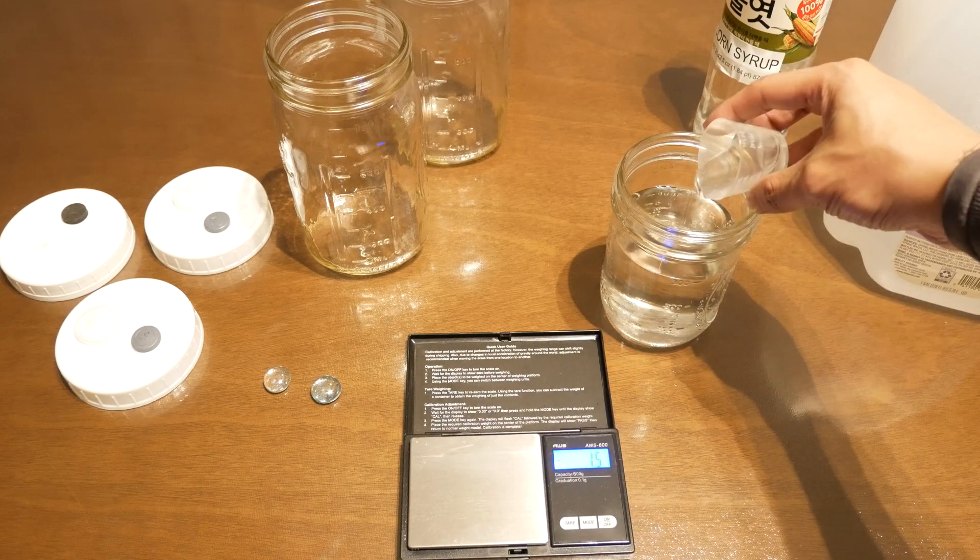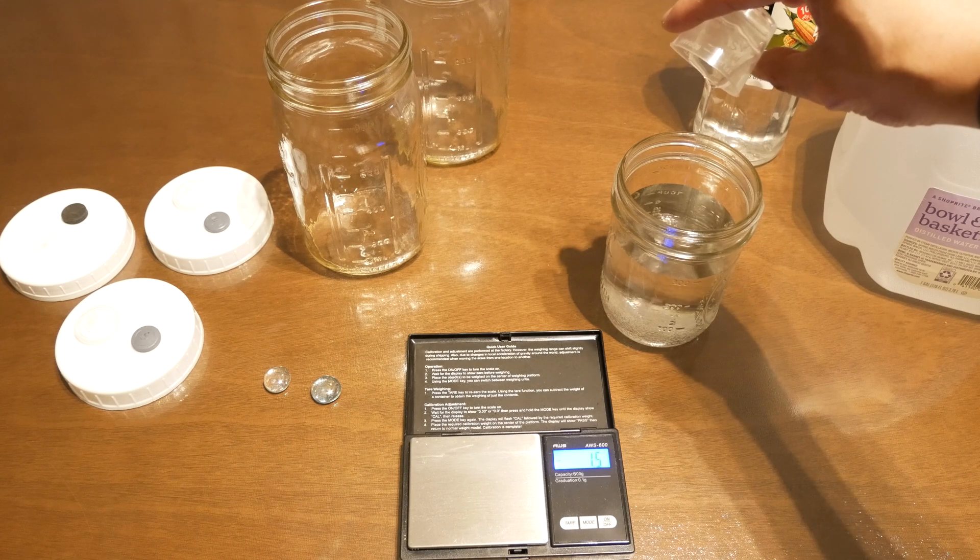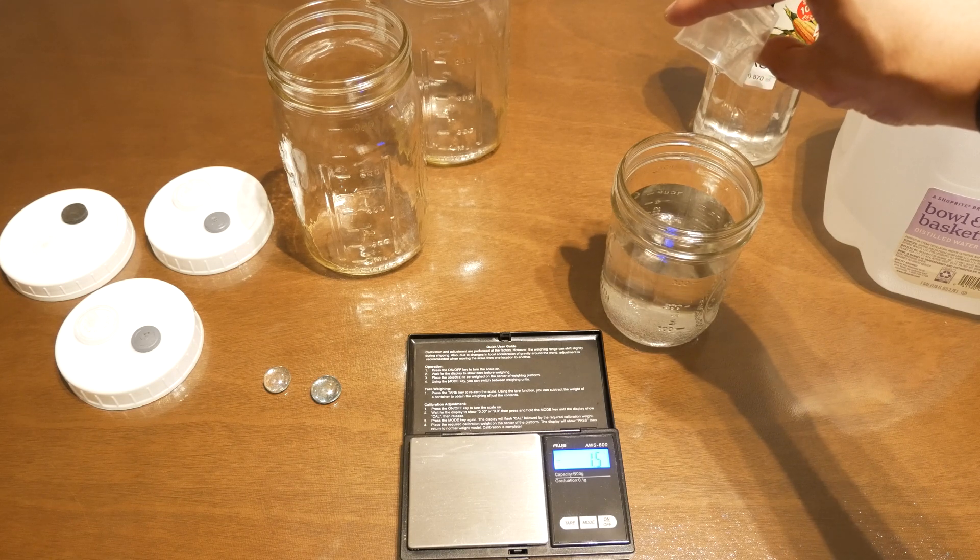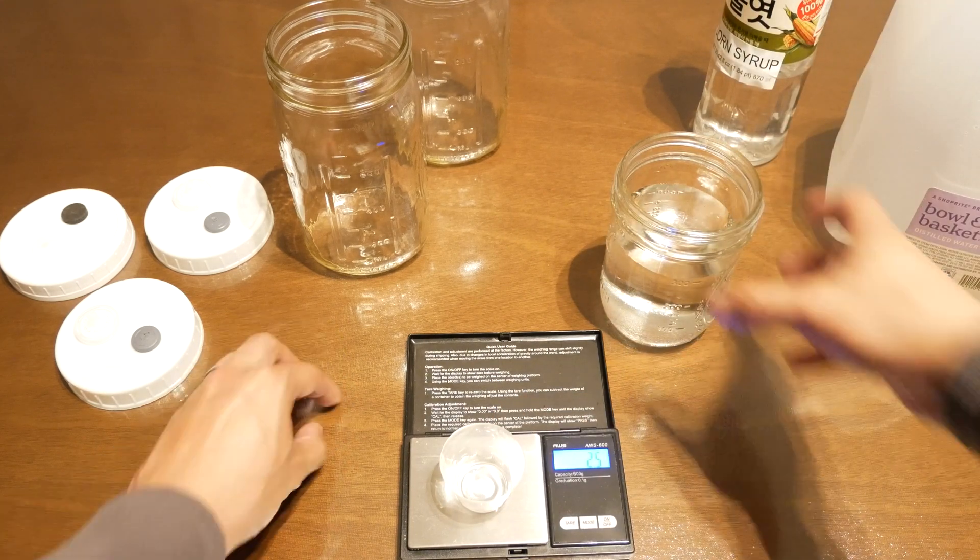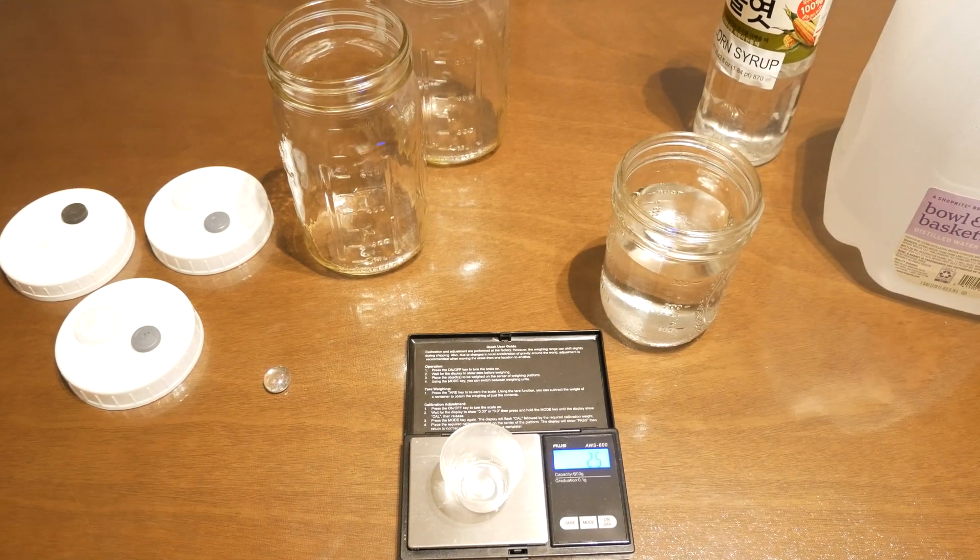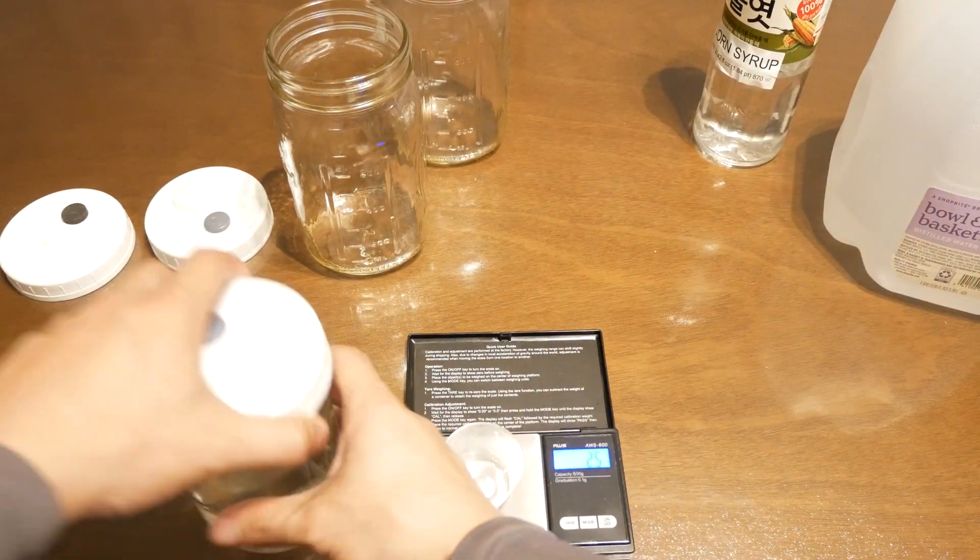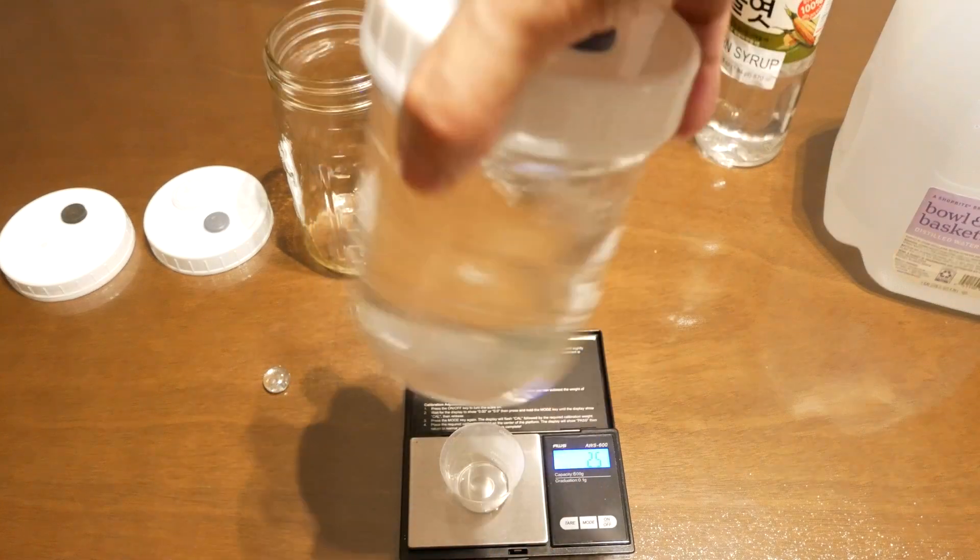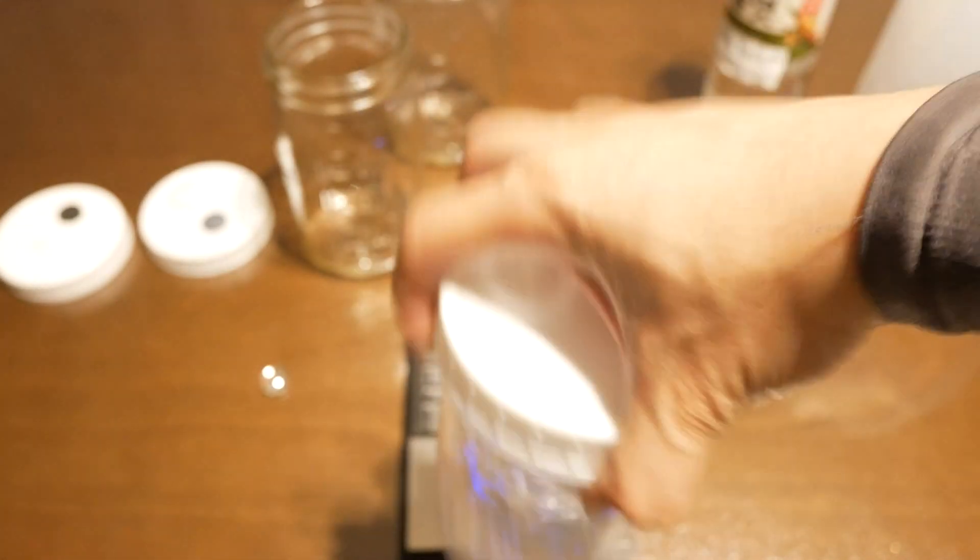Now we're going to go ahead and add this into our 300 milliliters of distilled water. And after this, we're going to just add in our agitators. And then we'll go ahead and put on our liquid culture lids. We're going to give this a quick tighten. And we're going to go ahead and stir everything up to make sure that everything is evenly mixed.